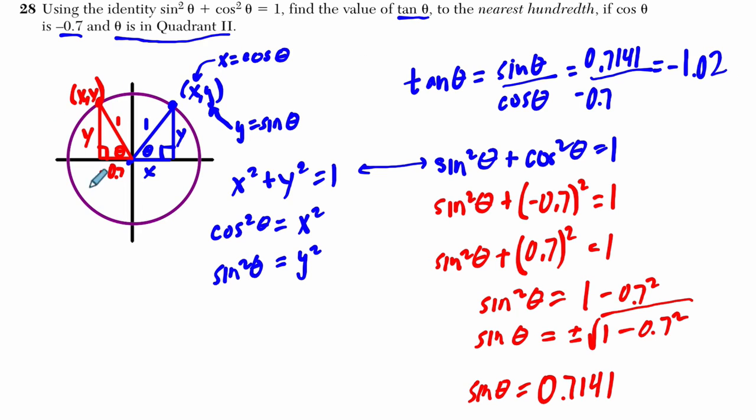And that makes sense. The tangent is negative in our second quadrant, because it's the ratio of sine to cosine, and sines are positive there, and cosines are negative. All right, I hope that helped.